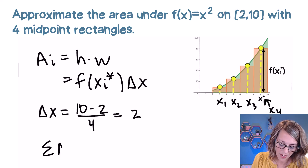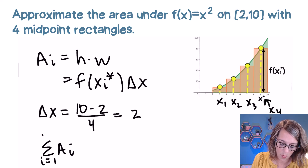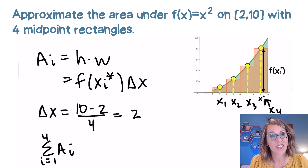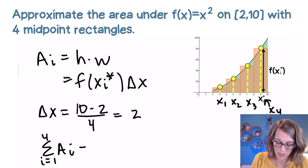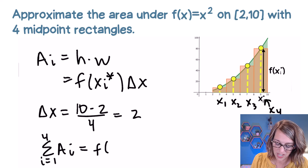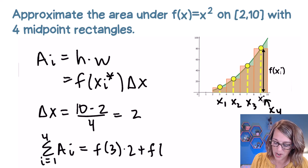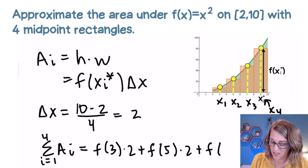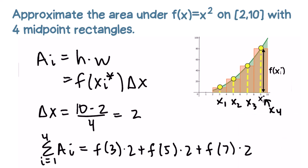I want to add up all four of these areas, so i goes from 1 to 4. This is summation notation, but what I'm really doing is adding up each area. So it's f(3) times 2, plus f(5) times 2, plus f(7) times 2, plus f(9) times 2.